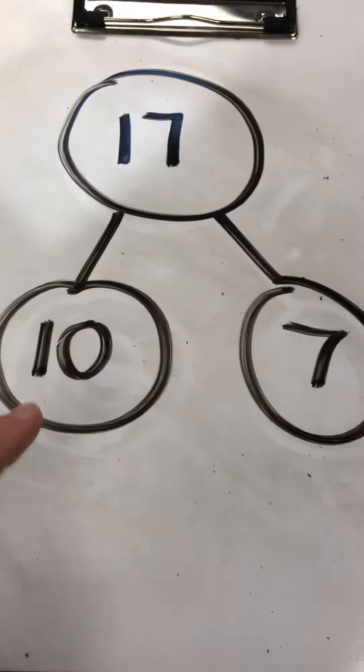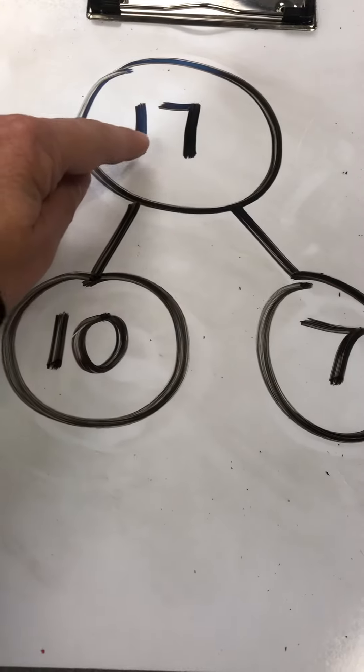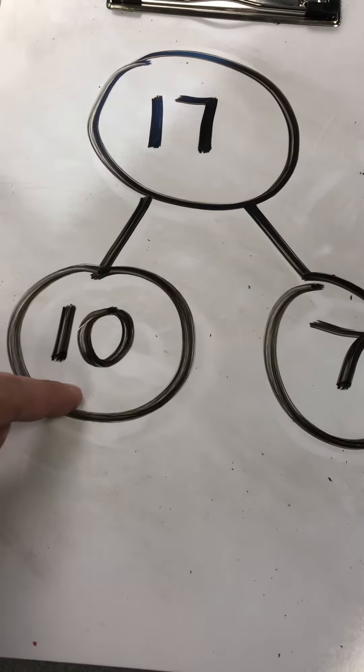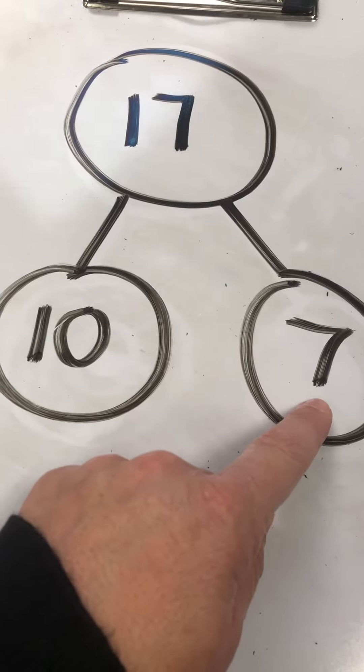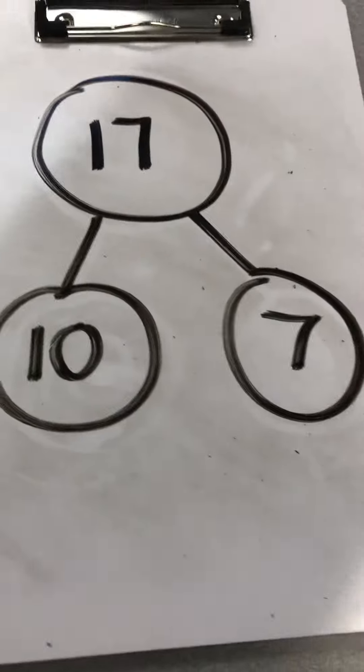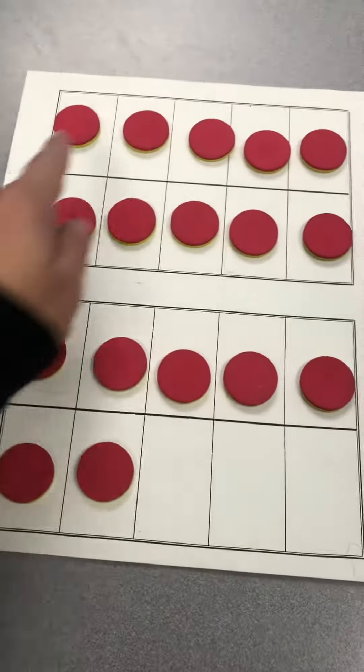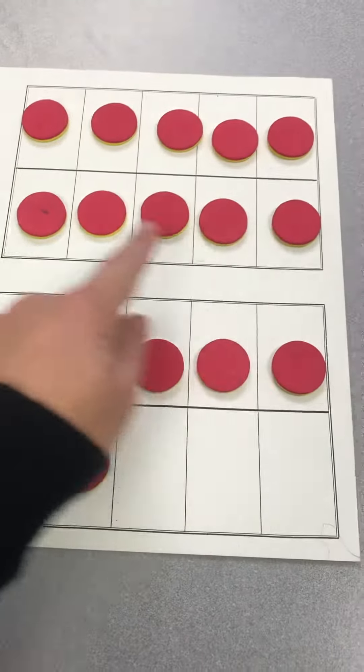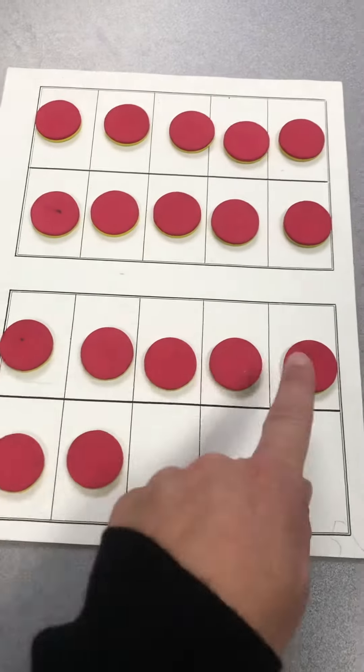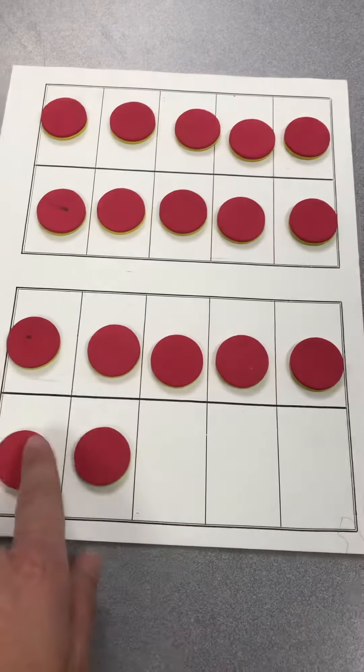So then I show you that here, that the 1 means a 10 and 7 more. So if you wanted to actually count out 17 things, you would have a group of 10 things and then 7 more. This is 5, 6, 7.